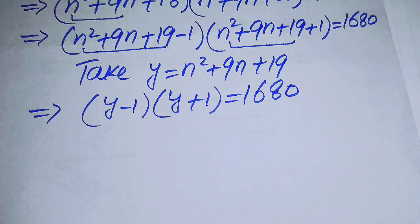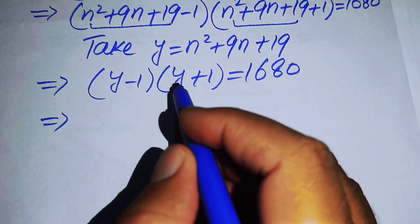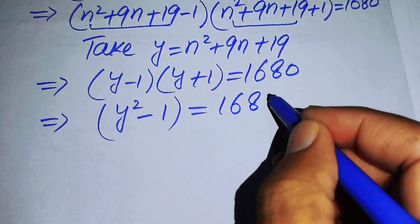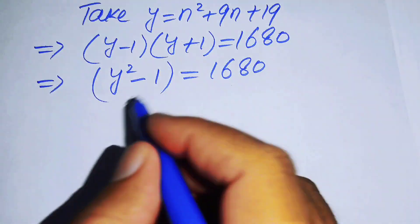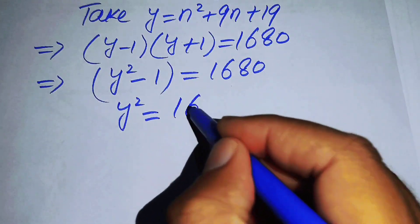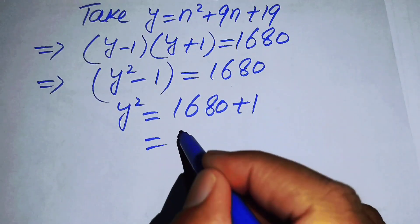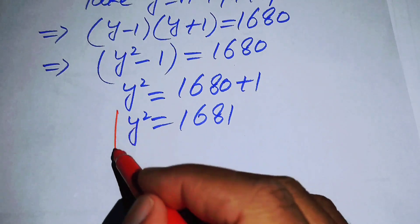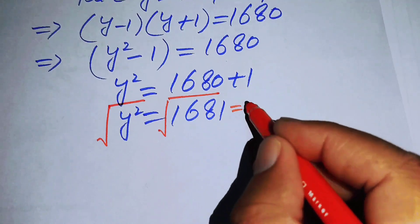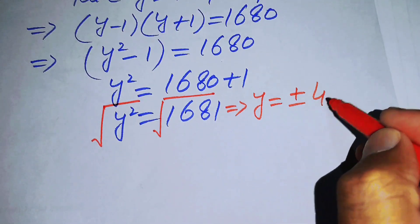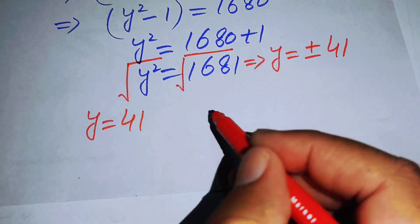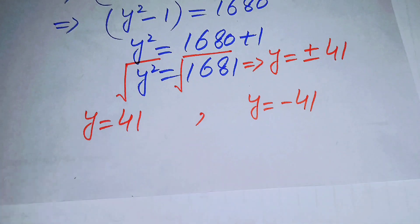Expanding, (y−1)(y+1) = y²−1 = 1680, so y² = 1681. Taking the square root of both sides, y = ±41, since √1681 = 41. This gives us two cases: y = 41 and y = −41.